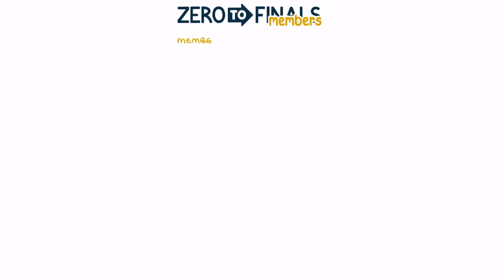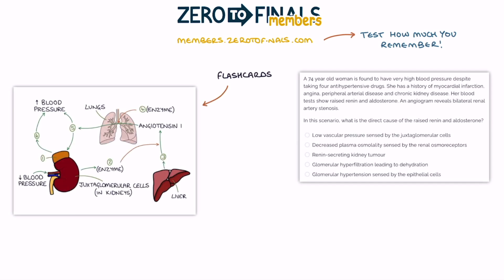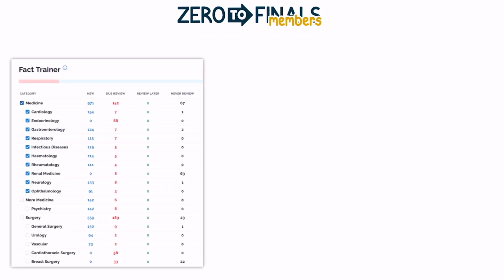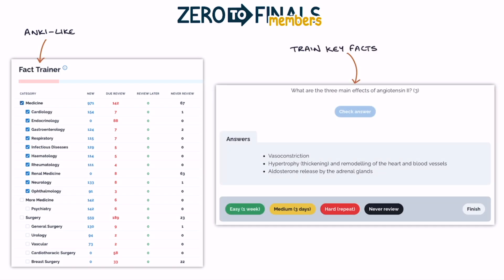Now head over to members.zerotofinals.com to test how much you understood and remembered from what we just went through. The members site contains illustrated flashcards, multiple choice questions, and short answer questions designed to perfectly complement the other Zero to Finals resources. It also features an Anki-like fact trainer tool where you can train key facts into your memory, rating those facts on how difficult you find them and going over them with spaced repetitions to ensure they stay with you long term. You can find links to the resources in the video description.